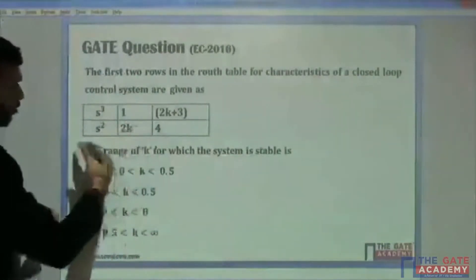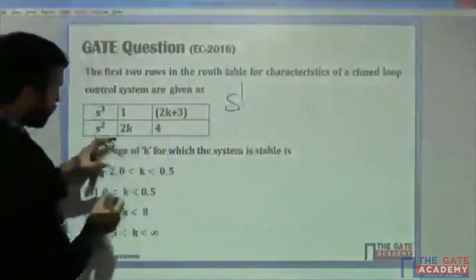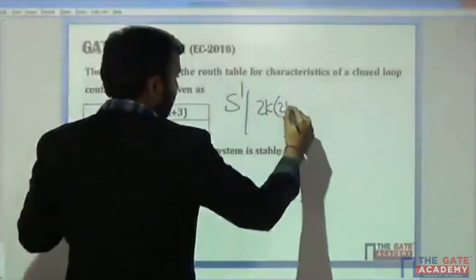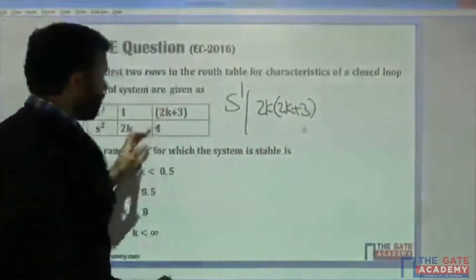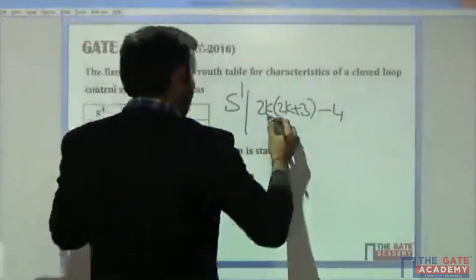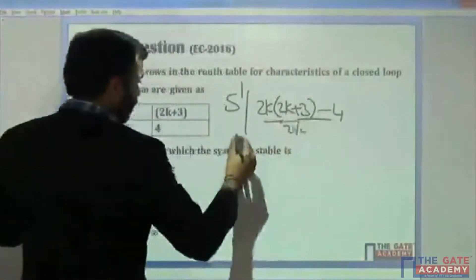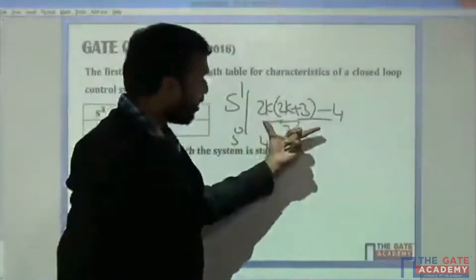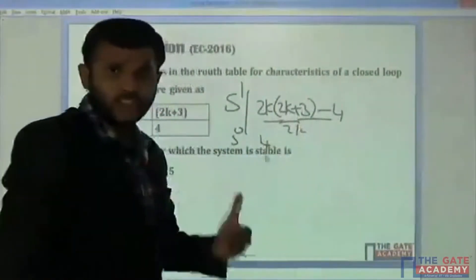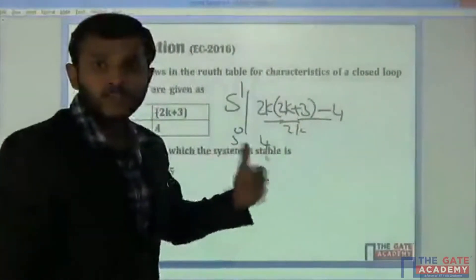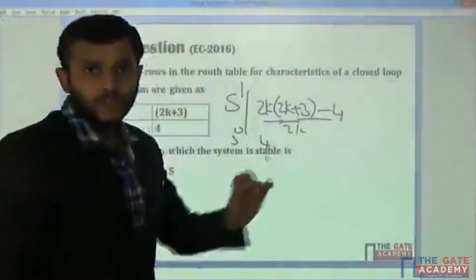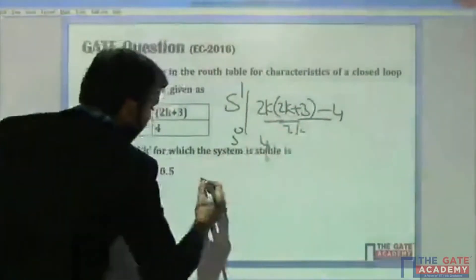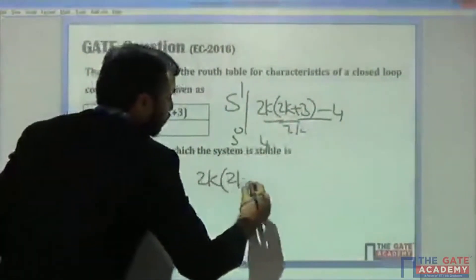For the s^1 row in the Routh array, what we will get is: 2k(2k+3) minus 4, divided by 2k. And the s^0 row will be 4. If you take the value of this — for the s^1 row equal to zero, the system will be marginally stable. We can vary K up to the point where the system is marginally stable, so I will equate this coefficient of the s^1 row: (2k)(2k+3) divided by 2k.